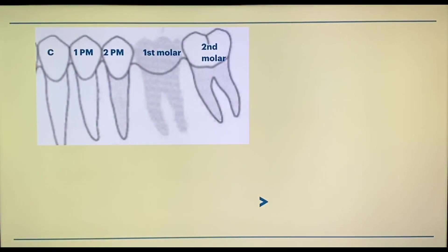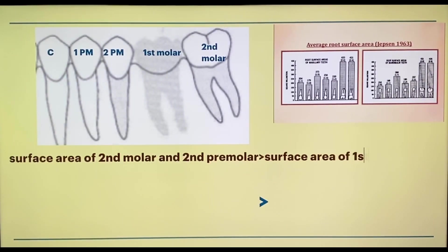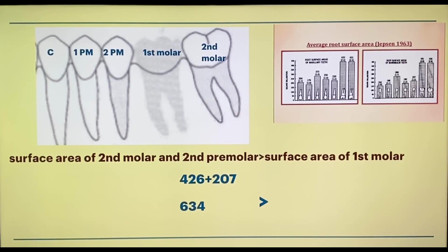We will see this with an example. To explain Ante's law, we will consider the Jepsen chart. Jepsen provided a chart in 1963 about the surface areas of teeth, so the surface areas have already been calculated. When we calculate the area of the second molar and second premolar, it comes to 634. When we calculate the surface area of the first molar, it is 431. Since 431 is less than the combined area of the second premolar and second molar, Ante's law is satisfied, and we get adequate support and less flexure.